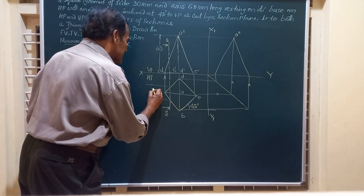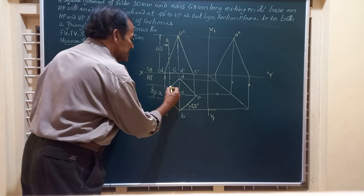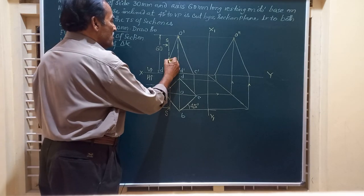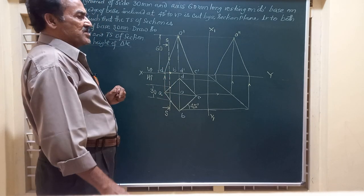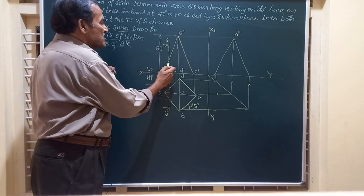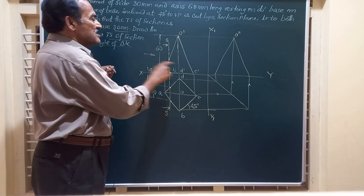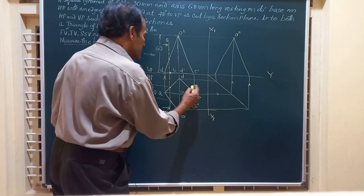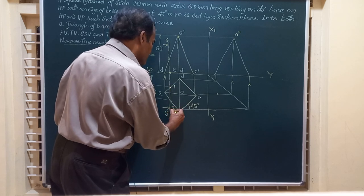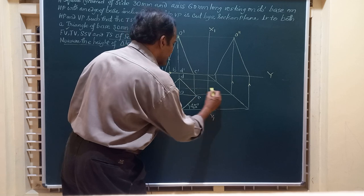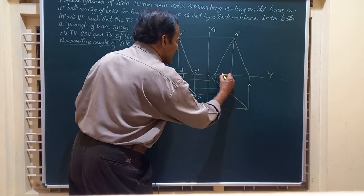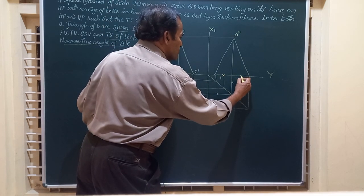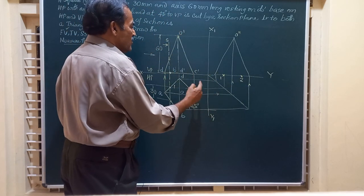The section plane cuts the solid such that the base of the resulting triangle equals 30 mm. I have marked the two points where the base of the solid is cut — one on the slant edge of the solid. After removing this small part, when you view the solid in this direction you will see the true shape in the end view. Point 1 is on edge OA, and I draw a horizontal line and a vertical line through it. Similarly, at equal distance on the other end you have point 2.